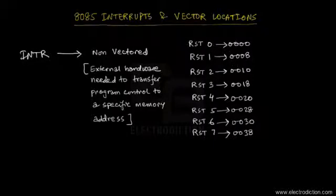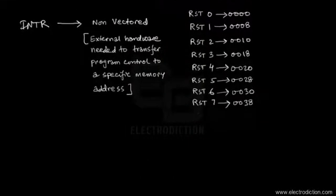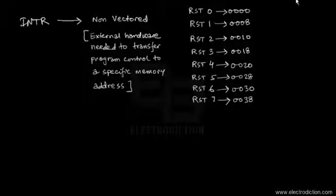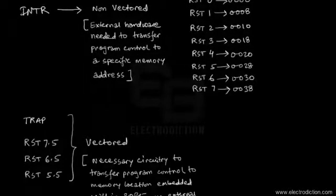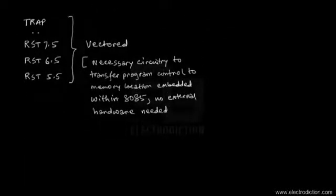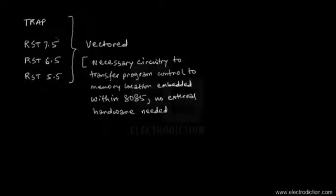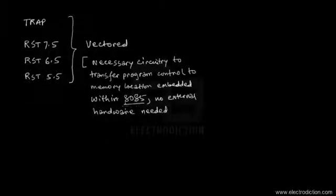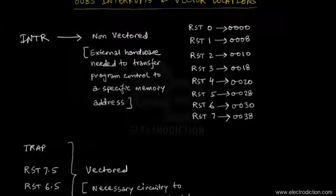For each of these specific interrupt requests on the INTR pin, the program control is transferred to specific memory locations. Other than that, we also have other interrupt pins which are vectored — those include the TRAP and RST 7.5, 6.5, and 5.5 pins. These are vectored interrupts, meaning the necessary circuitry to transfer program control to a specific memory location is embedded within the 8085 chip — no external hardware needed.